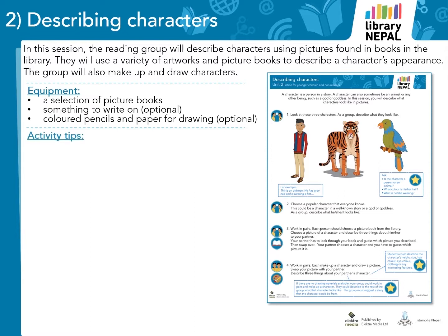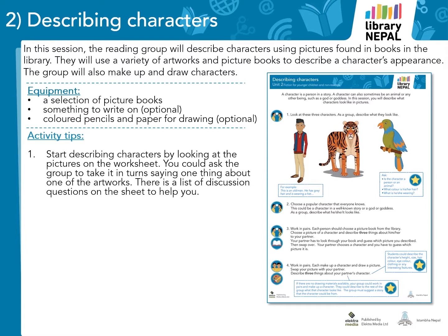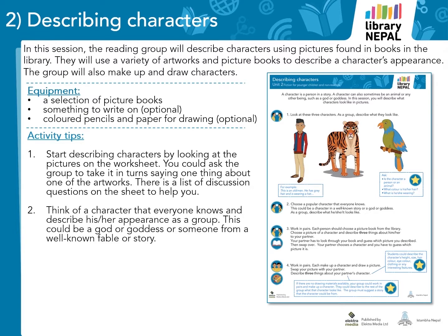Activity 1 is a group activity in which the students describe the characters on the worksheet. On the sheet, you will see pictures of an old man, a tiger and a bird. You could ask the group to take it in turns saying one thing about one of the characters. There is a list of discussion questions on the sheet to help you in case your group struggles, for example: is the character a person or an animal? In Activity 2, the students work as a group to describe a well-known character. Think of a character that everyone knows and describe his or her appearance as a group. This could be a god or goddess or someone from a well-known fable or story. You could use the discussion questions from the previous activity if your group gets stuck.